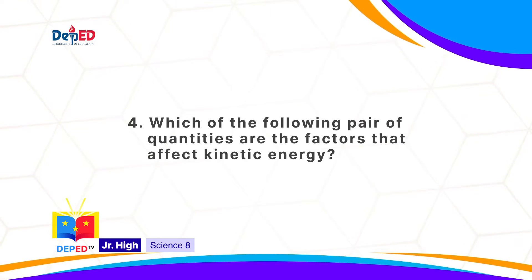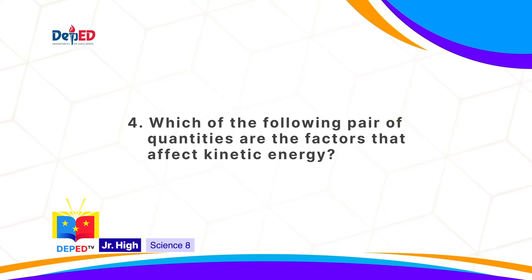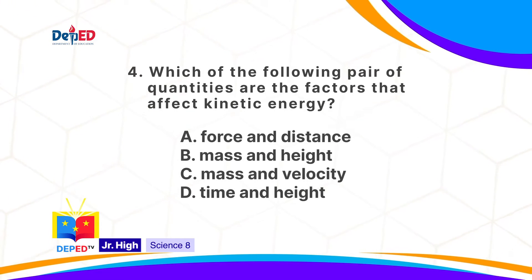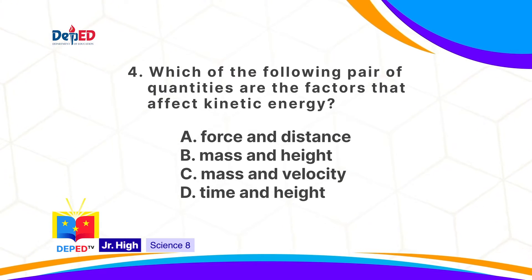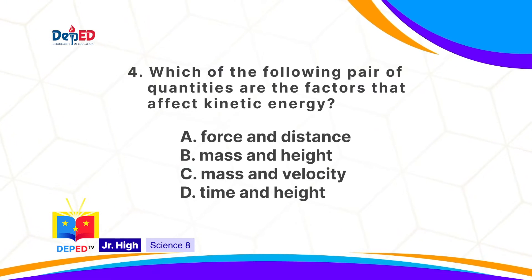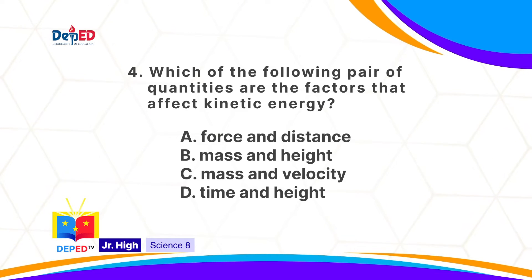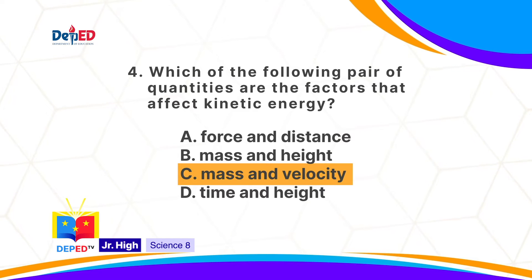Which of the following pair of quantities are the factors that affect Kinetic Energy? A, force and distance. B, mass and height. C, mass and velocity. D, time and height. The correct answer is C: mass and velocity.